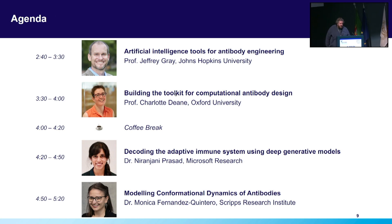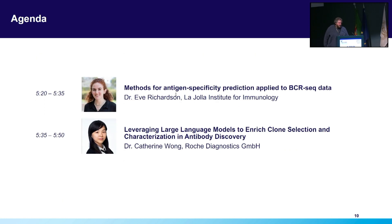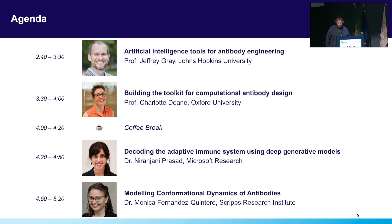So we've got an incredible agenda lined up for the rest of the afternoon. We are very lucky to have people working really at the forefront of almost all areas of this field. We will quickly go through the remainder of this agenda punctuated by a coffee break, and then we will finally have a couple of selected spotlight talks which have come from our poster presenters. Without further ado, I think we'd better kick off into our first session with Professor Jeffrey Gray of Johns Hopkins University and Director of the Rosetta Commons, who will be presenting on Artificial Intelligence Tools for Antibody Engineering.